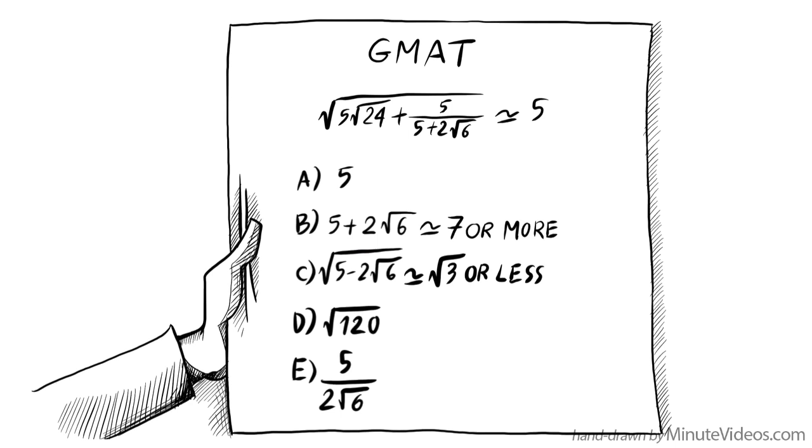What about D? The square root of 120. We don't know that, but we do know that the square root of 100 is 10. Let's just write 10 or more. That looks too high. Last, there is E: 5 divided by 2 times the square root of 6. Now, for 2 times the square root of 6, let's just write more than 2. And 5 divided by something that's more than 2 also looks too small. Now we can use the process of elimination and cross out all the wrong answers to see what's left. A it is.